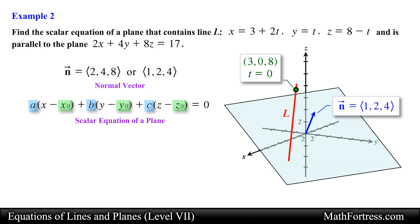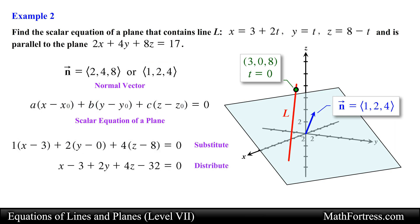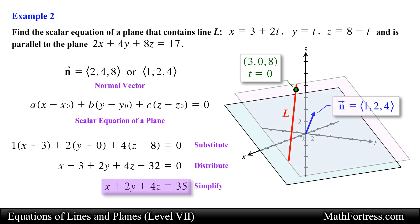Now it is just a matter of substituting the coordinates of the point and the components of the normal vector, then simplifying the expression and moving the constant to the other side. Doing that we obtain the following scalar equation of the plane, and this is our final answer. Let's move along to the next example.